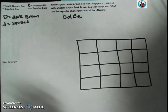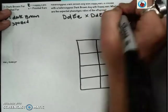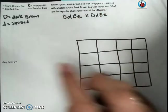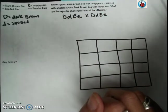Now this is crossed with a heterozygous dark brown dog with floppy ears. So the same phenotype and they're heterozygous for both. So this is a true dihybrid, hybrid for both traits, dihybrid cross. What are the expected phenotypic ratios of the offspring?